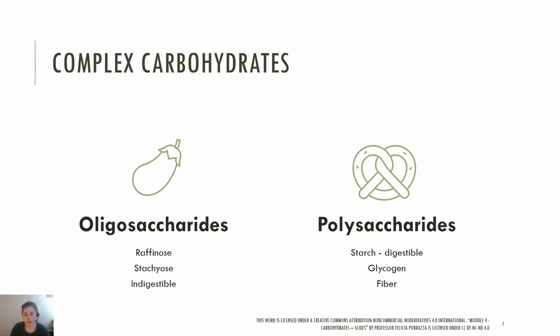Glycogen is another example of a polysaccharide, and this is the storage form of carbohydrates in humans and animals. The primary storage sites for glycogen are the liver and the muscle cells. The liver breaks down glycogen to keep our blood glucose levels stable, and muscle glycogen provides muscles with glucose. Together, liver and muscle glycogen can provide enough glucose to last about 24 hours if you were fasting or on a low-carb diet.